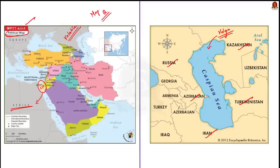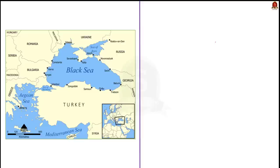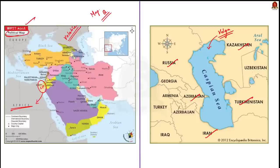Let us move on to the Black Sea. The Black Sea is bordered by Ukraine, Russia, Georgia, Turkey, Bulgaria, and Romania. Note down one important fact here: Georgia borders the Black Sea, Azerbaijan borders the Caspian Sea, and Armenia is landlocked.